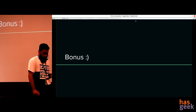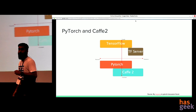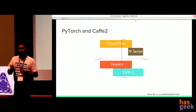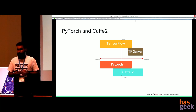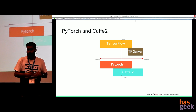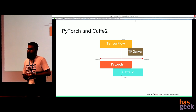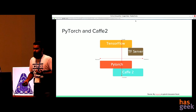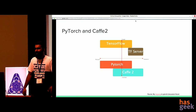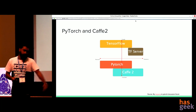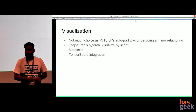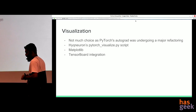Bonus point: PyTorch was actually created as a research framework, but Facebook is building an interop between PyTorch and Caffe2 very soon. Once that's done, it's like TensorFlow and TF Serve — you prototype your model in PyTorch, migrate it to Caffe2, and you're ready to deploy on any device, because Caffe2 is optimized for mobile devices as well and has a pretty good serving module, as per Facebook.